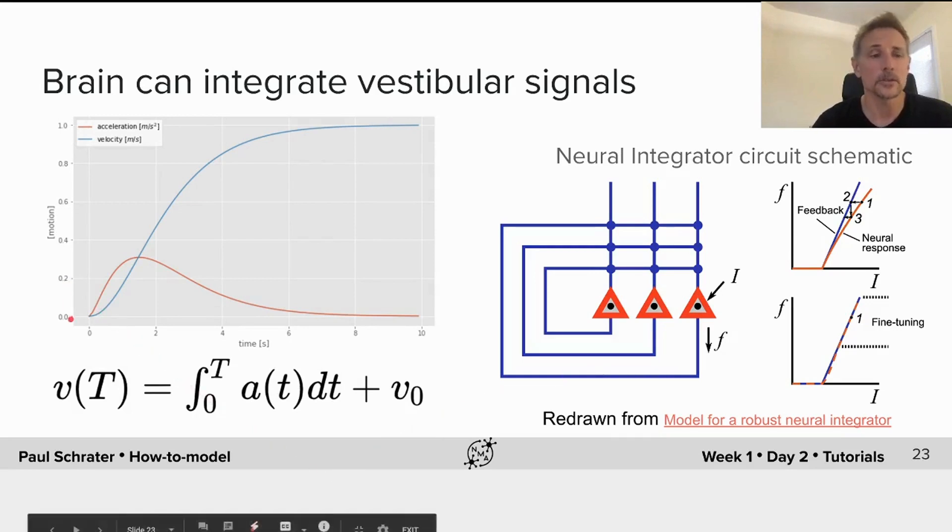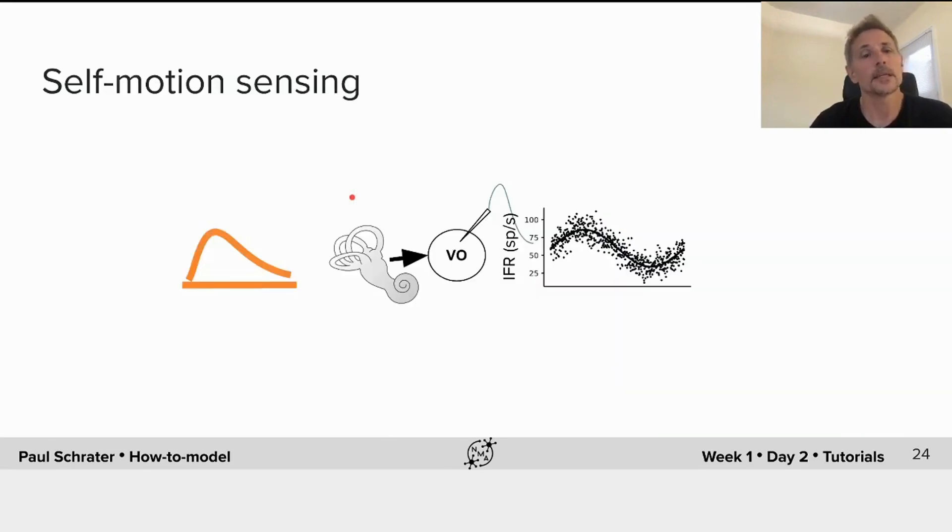We can assume that the brain has achieved an integration so that the acceleration signal that arrives at the otolith organ is transduced into a velocity signal somewhere in the brain. The self motion sensing system, however, is quite noisy. This noise means that it's much less reliable than the visual system.